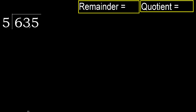635 divided by 5. 6 is not less, therefore with 6 — 5 multiplied by which number is nearest to 6, but not greater?